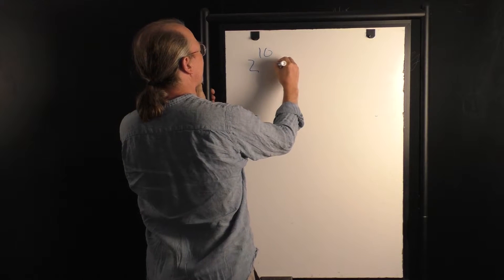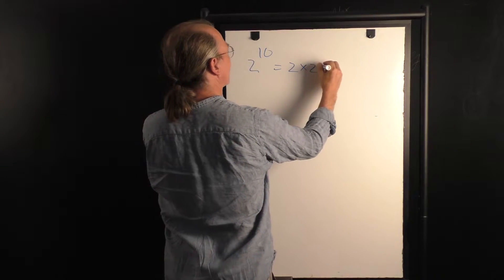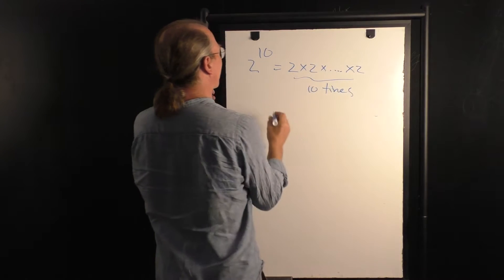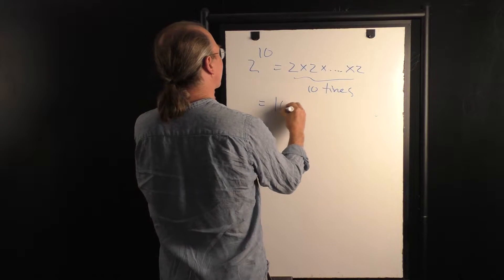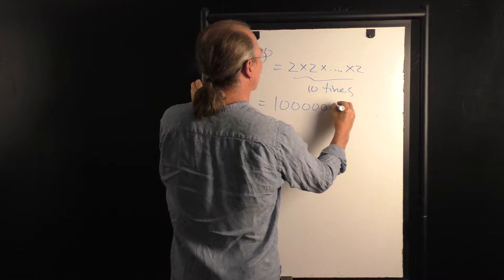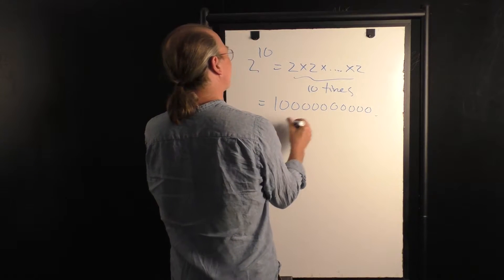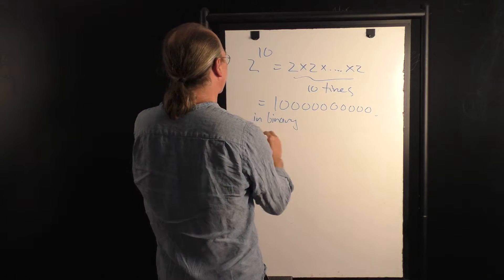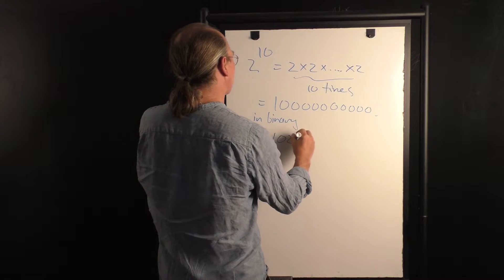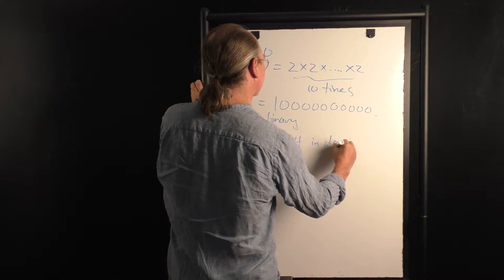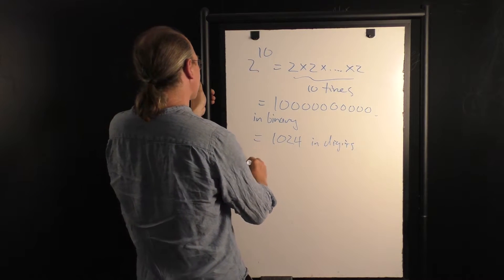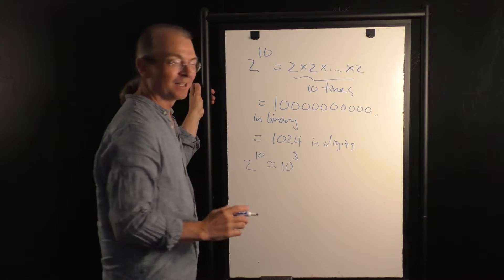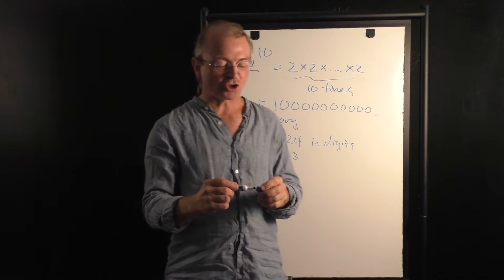2 to the 10th — which is 2 times 2 times ... times 2, ten times, i.e., 2 raised to the power of 10 — equals 1,000,000,000,000 in binary, which is actually equal to 1,024 in decimal digits. That is to say, 2 to the 10th is approximately equal to 10 to the 3rd — a little more than 1,000, 1,000 plus change.